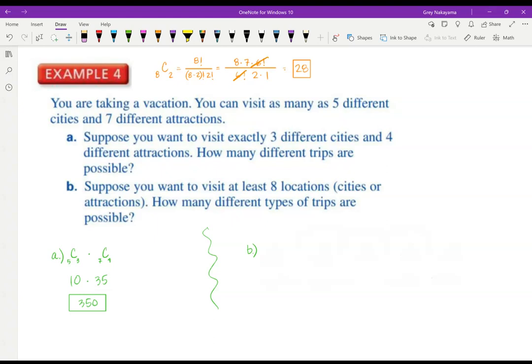Now look at this one. Suppose you want to visit at least eight locations. How many different ways? So at least eight. How many different locations are there? There are cities or attractions? That's five plus seven. So there's 12 of them. And if I want to visit at least eight, then I could have 12 choose 8, or I could have 12 choose 9, or 12 choose 10, or 12 choose 11, or 12 choose 12. It's an or situation. So I'm adding these different possibilities. So 12 choose 8 is 495. 12 choose 9 is 220. 12 choose 10 is 66. 12 choose 11 is 12 and 12 choose 12 is one. So when you add all those up, you get 794 different types of trips.